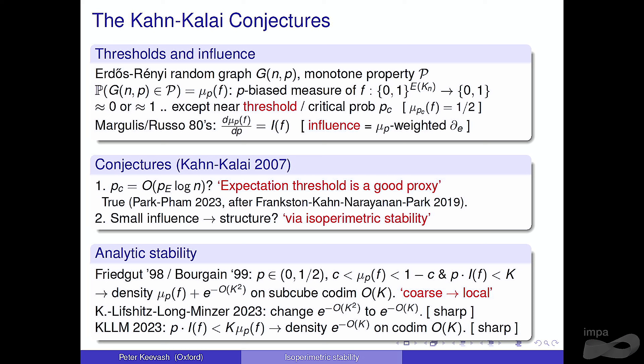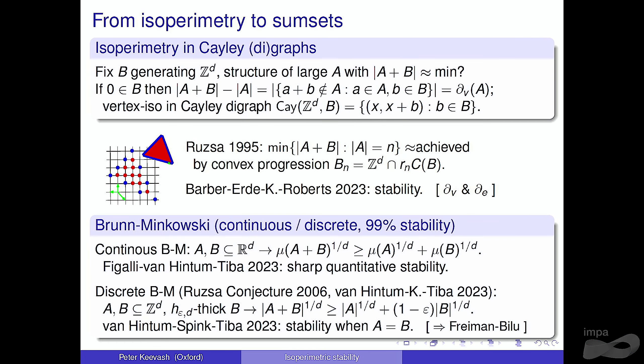In Bourgain's paper the density increase bound is e to the minus order k-squared. With Licherts, Long, and Mince, we improved this to the sharp bound, something exponential in constant times k — sharp for tribes, which is a nasty Boolean function. We also consider the sparse regime where there's no assumption on the measure being bounded away from zero and one, and with a relative influence assumption, you again get strong correlation.